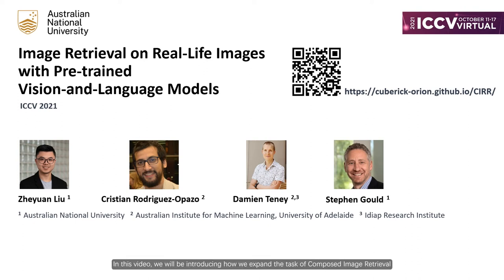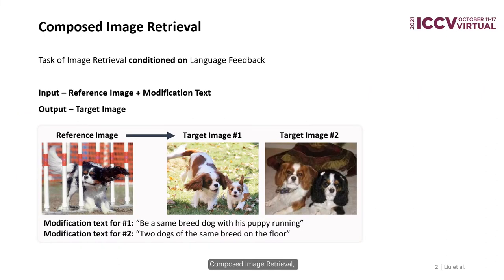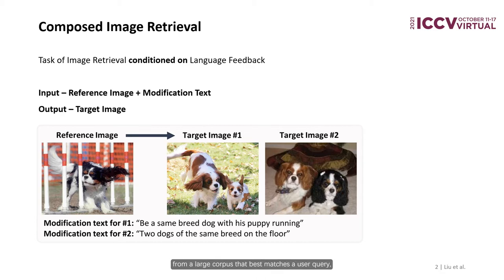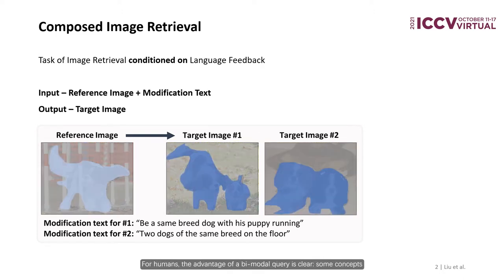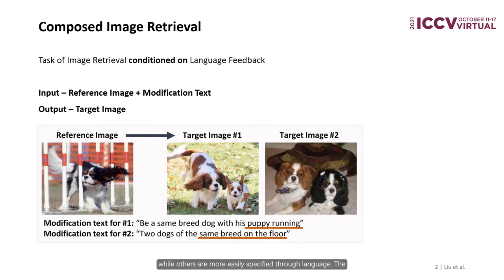In this video, we'll be introducing how we expand the task of Composed Image Retrieval in the open-domain real-life images. Composed Image Retrieval, or Image Retrieval Conditional Language Feedback, aims at finding a target image from a large corpus that best matches the user query, which is provided as a reference image plus modification text pair. For humans, the advantage of a bimodal query is clear: some concepts and attributes are more concisely described visually, while others are more easily specified through language.